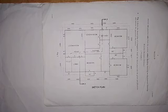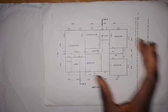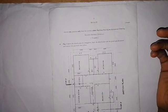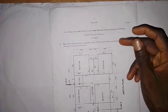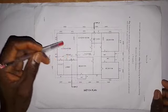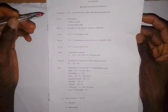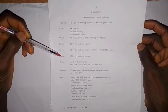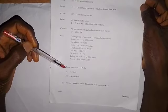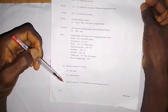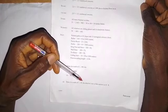We'll be working on this building drawing problem. This is the sketch plan, and figure two shows the sketch plan of a bungalow. We are to study the sketch plan with the given specifications and answer the questions. The specifications include foundation, floor, wall, lintel beams, column, doors, windows, and roof. We are to draw to a scale of 1:100 the floor plan and front elevation, and to a scale of 1:50 the detailed section view on YY.